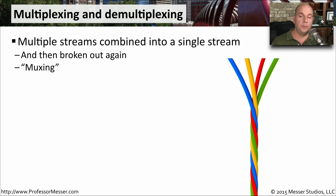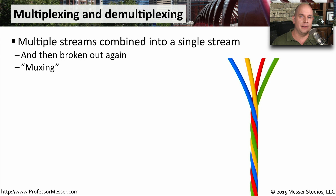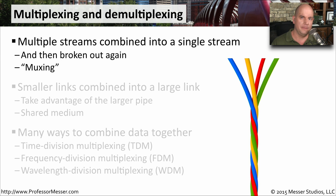Multiplexing is when we take multiple streams of information and combine them together so that we can send them across a single stream. Then on the other side, we break it out into its multiple streams again. You'll sometimes hear this multiplexing process referred to as muxing.